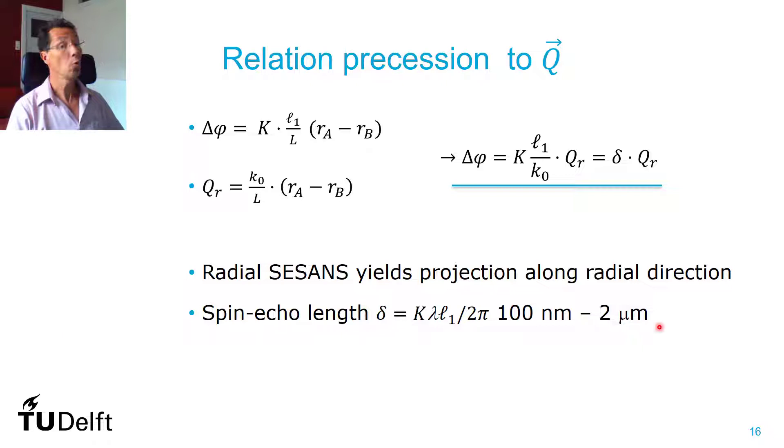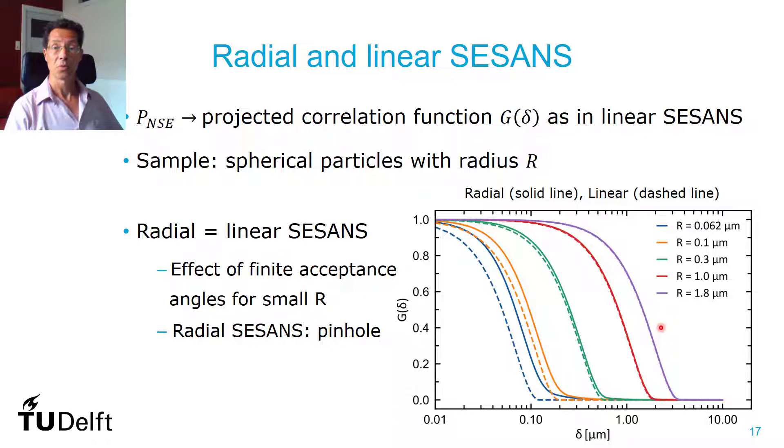Now, we did calculations for the correlation functions you would measure. And you see here some of the calculations, and the solid line, that's what we expect for the radial SESANS. We compared to the analytical ideal function of linear SESANS, which is the dashed line, and here you see for pretty big particles, 2 micrometers, 1 micrometer, 0.3, they pretty much overlap.